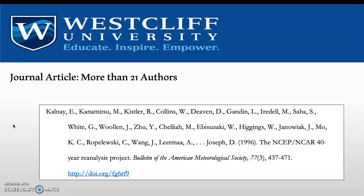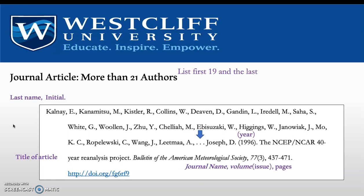For a journal article with more than 21 authors, you would list the first 19 following the same format, and then the very last author in the list. To separate this information, we use ellipses and there is no ampersand. The year comes in parentheses, and the title of the article and the remainder of the information is exactly the same.